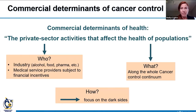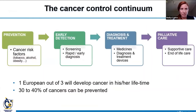All these actors do many beneficial things for our health, but today we want to focus on the potential dark side of commercial determinants. We focus on cancer along the whole control continuum: from prevention — tobacco, alcohol, obesity — through early detection, screening, diagnosis, treatment, and through to palliative and end-of-life care. Cancer is really a big market: one European in three will develop cancer in their lifetime.